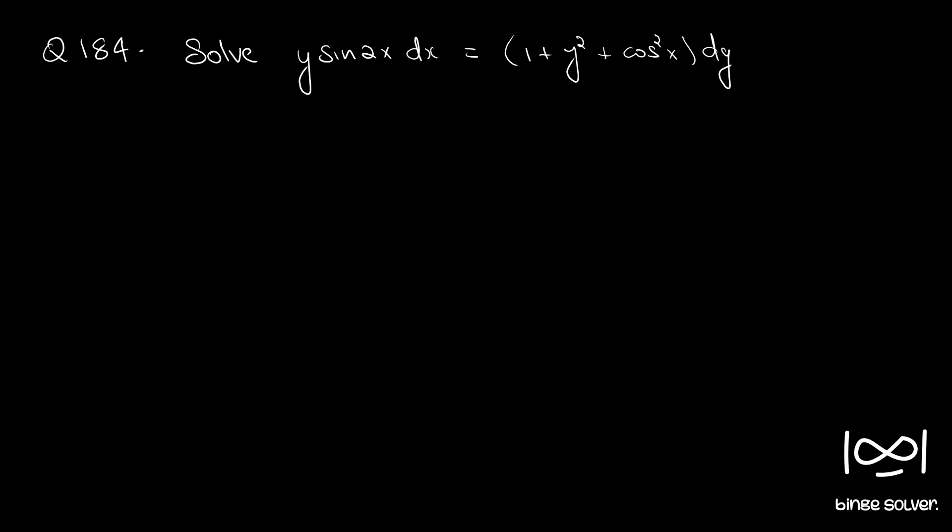So the given equation can be rearranged to a form m dx plus n dy equal to 0. And if we check the necessary and sufficient condition for such equations to be exact, which is d m by d y equal to d n by d x, we can see that the given differential equation is an exact equation. So we can solve it using the solution we used to solve for exact equations.